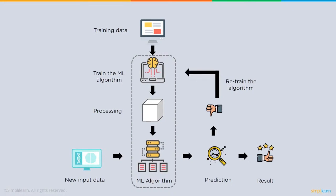Here's how machine learning works: first we train the data, then feed it into a machine learning algorithm for processing. We then take new test data, run it through the same algorithm, and check our predictions. If the prediction is poor, we go back and retrain the algorithm. This cycle continues until we get the best answer — whether in medical, economic, business, or stock domains.